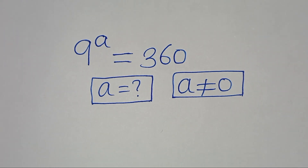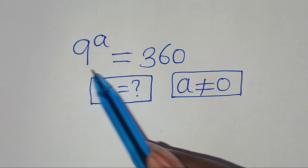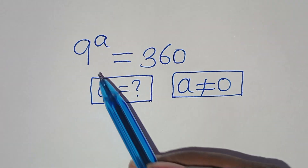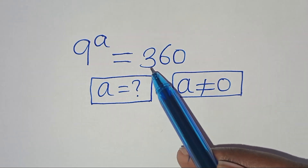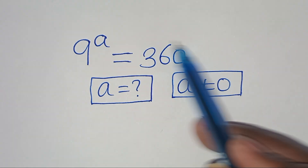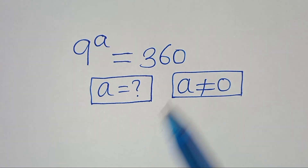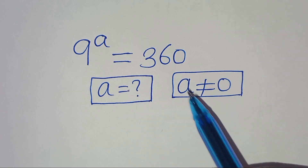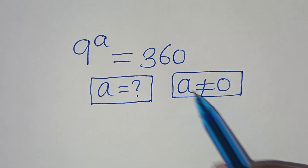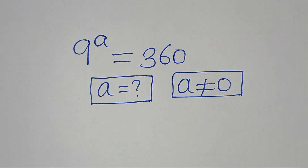Hello everyone, you are welcome to solve this nice exponential equation, which is 9 to the power of a, this is equal to 360. So what is the value of a, given that a is not equal to 0?